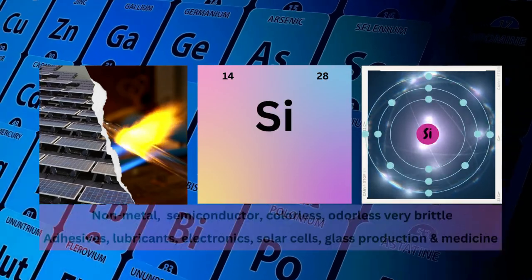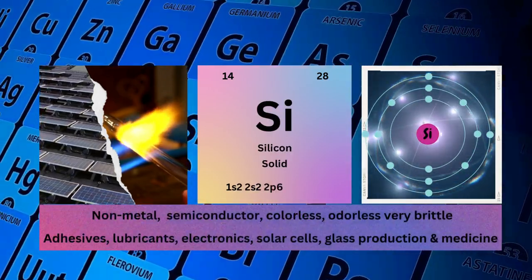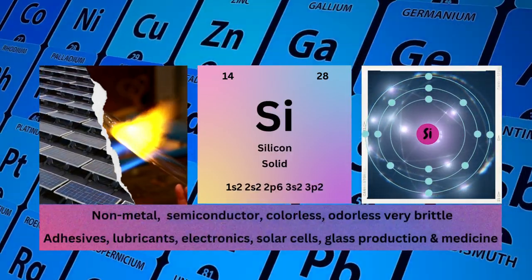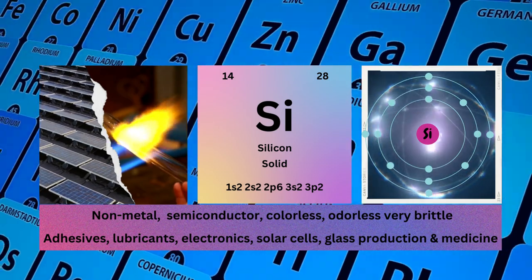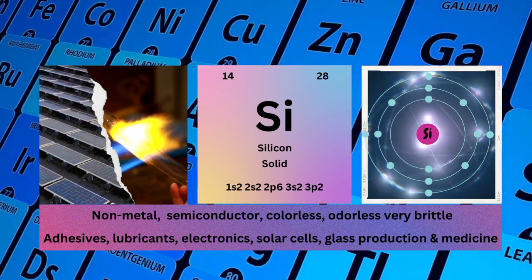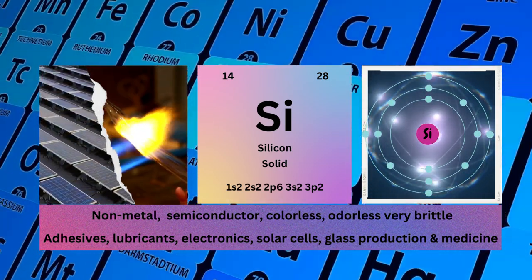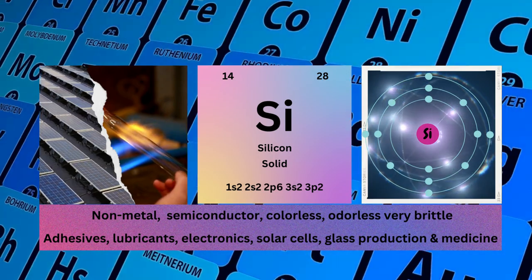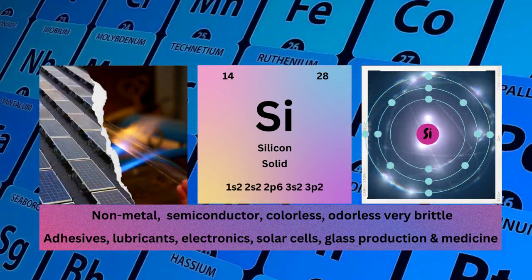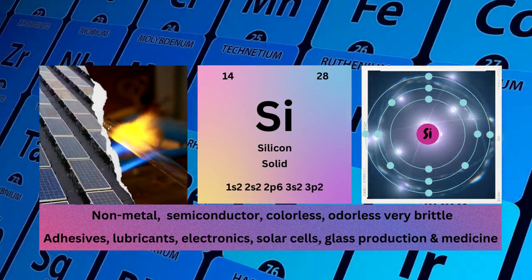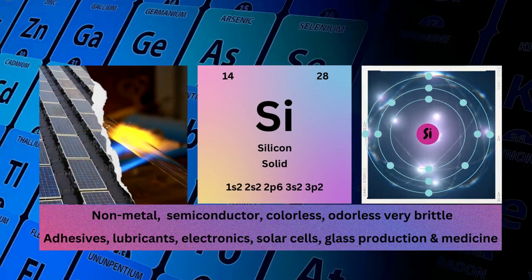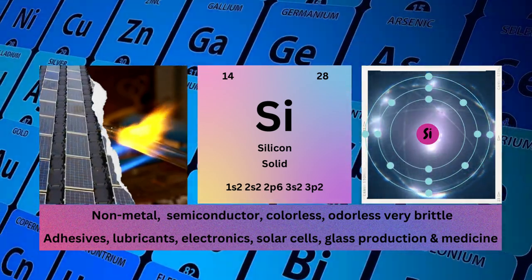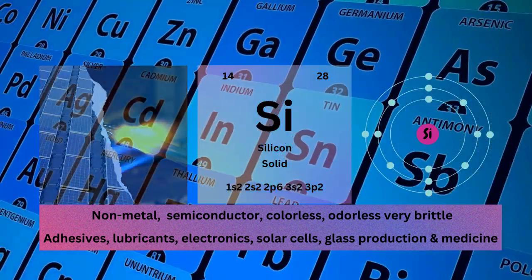Silicon, atomic number 14, mass number 28, symbol Si, state solid, electronic configuration 1s²2s²2p⁶3s²3p². Physical properties: non-metal, semiconductor, and brittle. Silicon used in adhesives, lubricants, electronics, solar cells, glass production, and medicine.